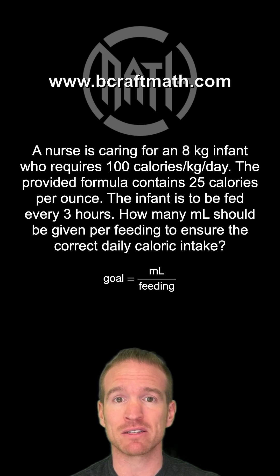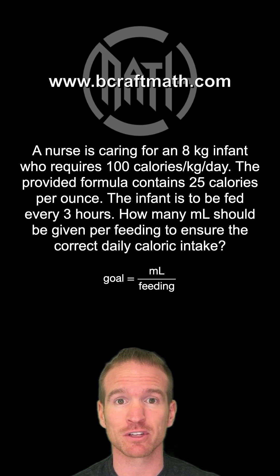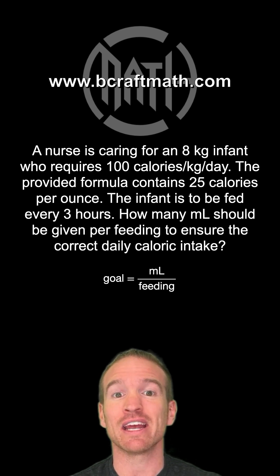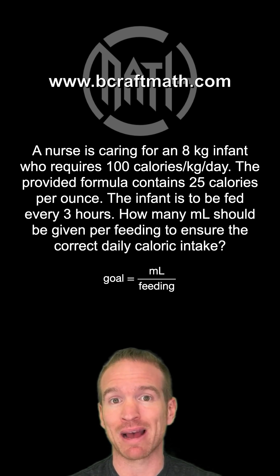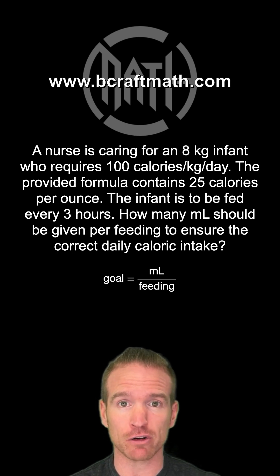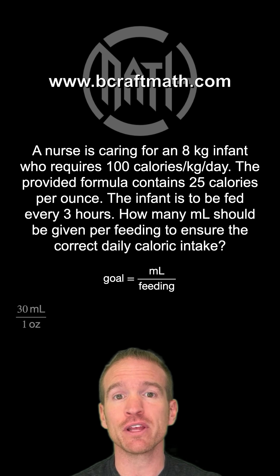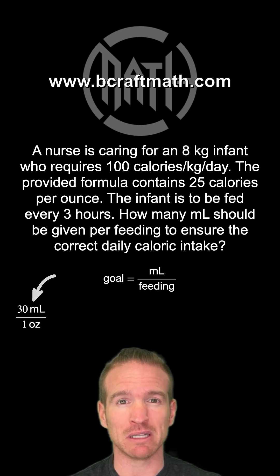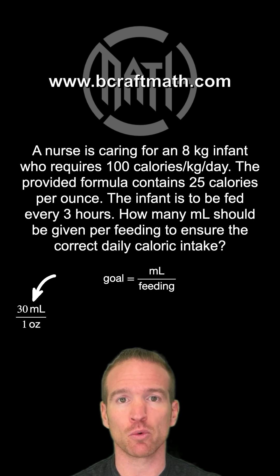I'm going to start my dimensional analysis with something that mentions milliliters. Yet our problem does not mention milliliters at all. It does talk about ounces and there is a conversion: 30 milliliters is one ounce. So I am putting milliliters at the top — 30 milliliters per one ounce — and that goes at the bottom.